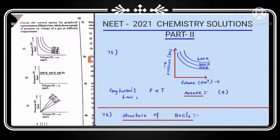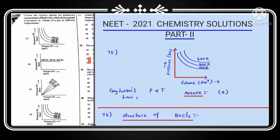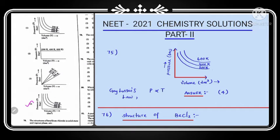Question number 75: choose the correct option for the graphical representation of Boyle's law, which shows a graph of pressure versus volume of a gas at different temperatures. Among 4 graphs, the correct answer is option 4, because pressure and temperature are directly related with each other according to Gay-Lussac's law. Option 4 shows that at high temperature, the pressure is also high, and vice versa.